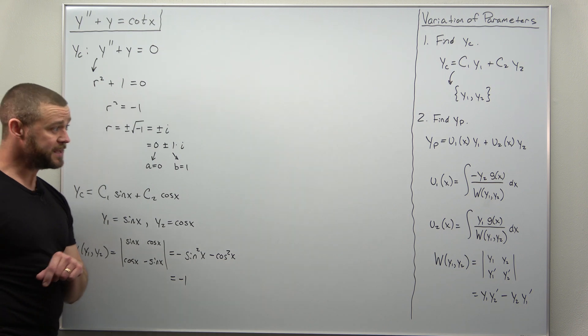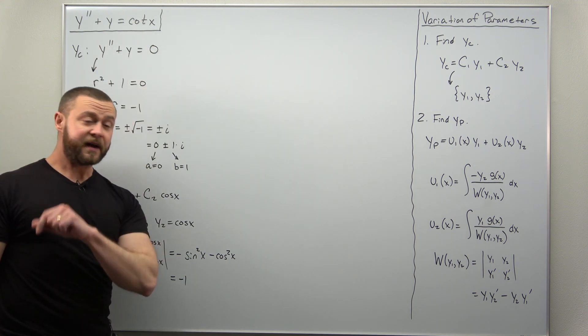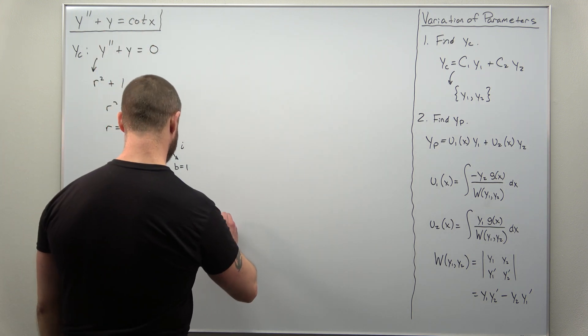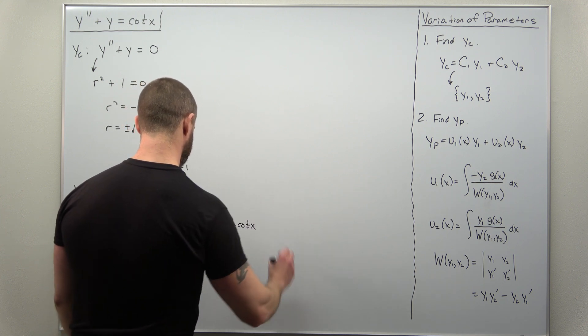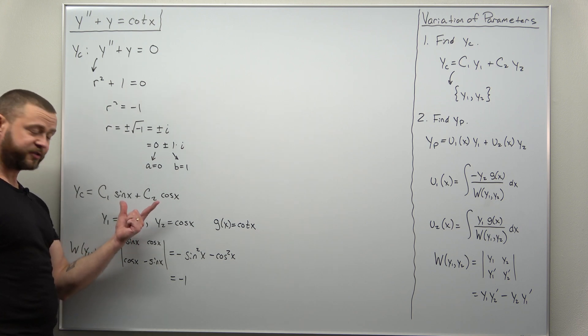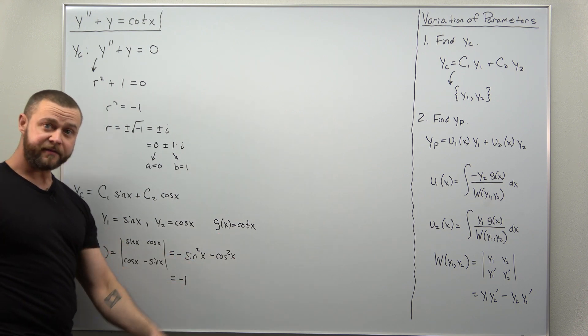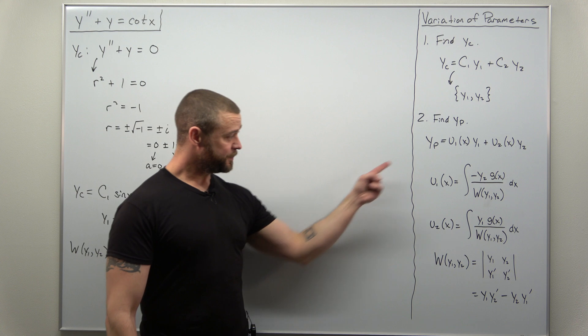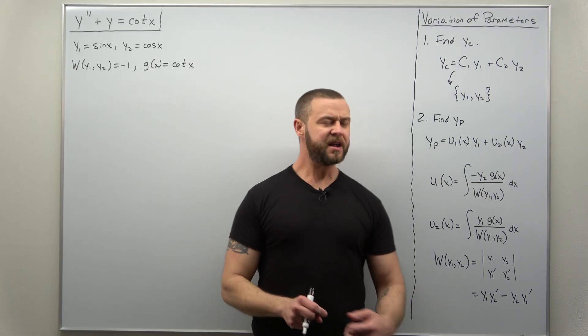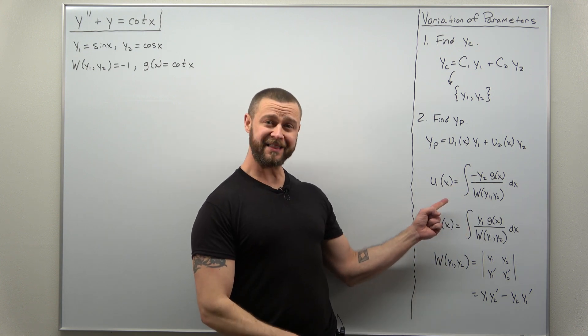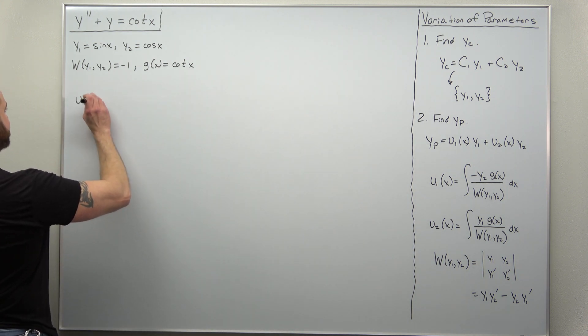The only other ingredient that we need to make use of your formulas here is the non-zero right-hand side, which g of x here is cotangent of x. All right, so we have our complementary solution, we have y1 and y2, we have the Wronskian which is negative one, and we have g of x. Now we're just going to plug it all in to these two formulas. Now we're ready to smash those integrals.